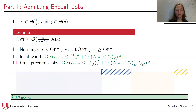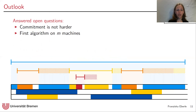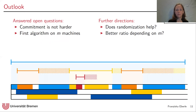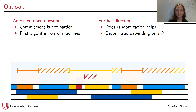To wrap up: I answered the open question of whether commitment is harder — no, it is not harder than scheduling without commitment — and presented the first algorithm for m machines. Open questions remain: does randomization help, and is it possible to get a better ratio depending on m? The latter is particularly interesting because in the machine utilization problem, Spiegel and Spiegel showed their competitive ratio decreases with increasing m. These are two lines of work we are currently pursuing, and I am happy to discuss ideas during the poster session at ESA. Thanks for your attention.